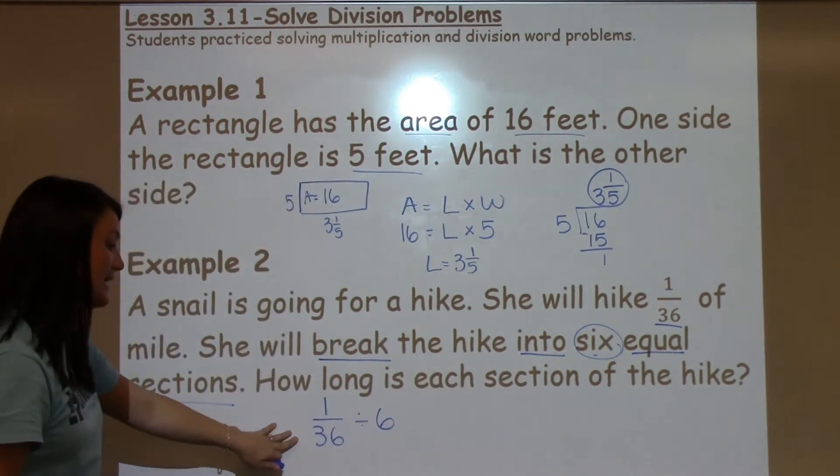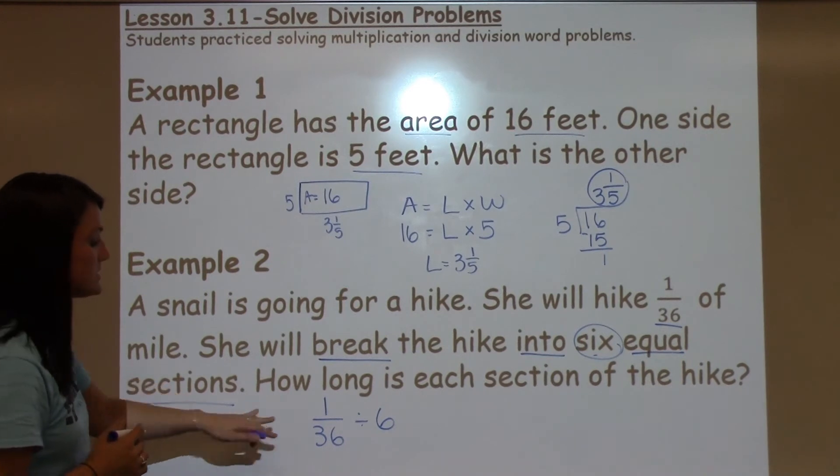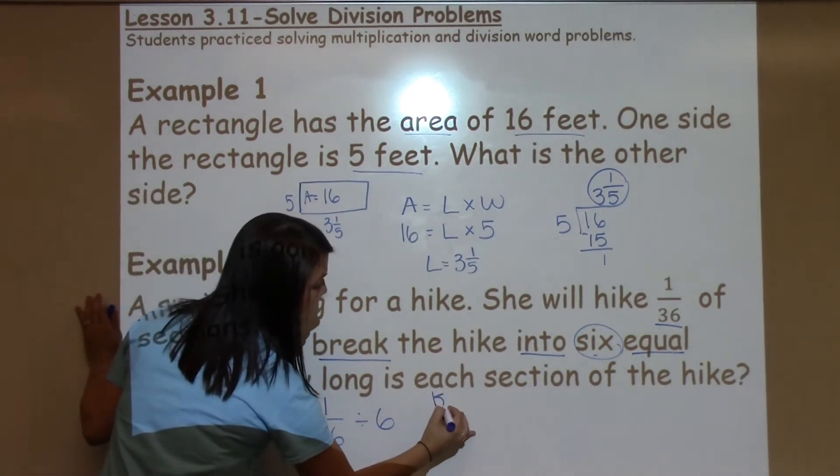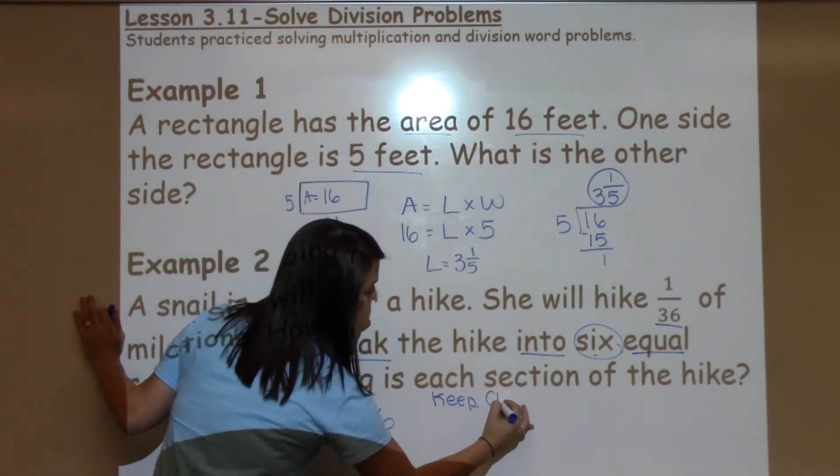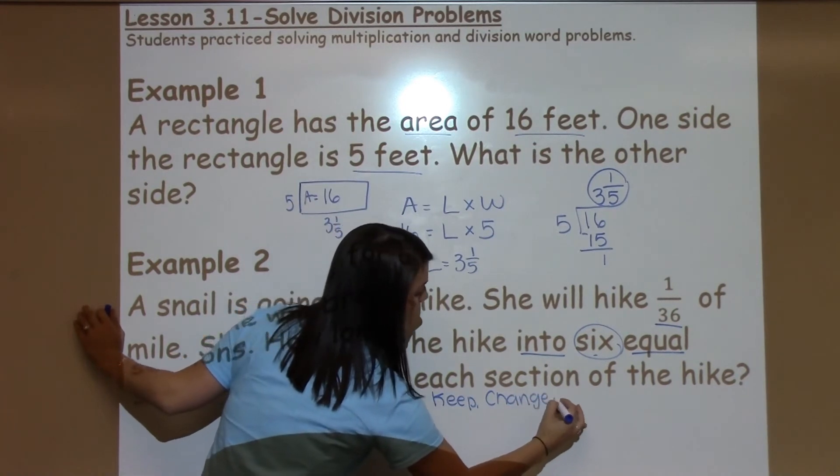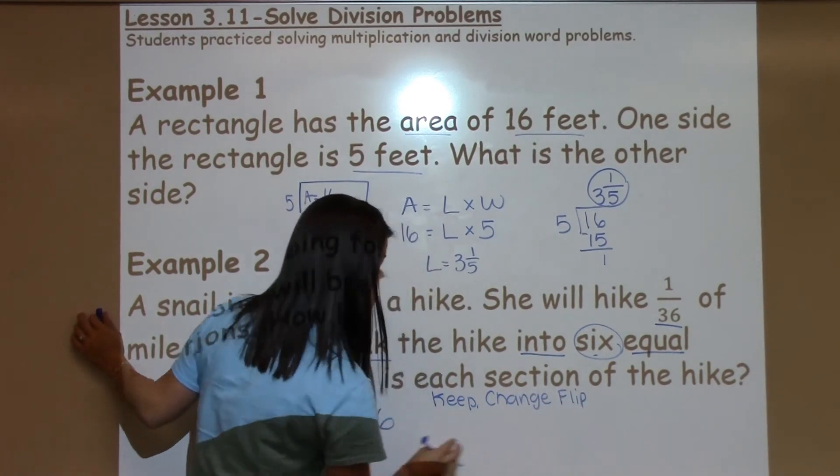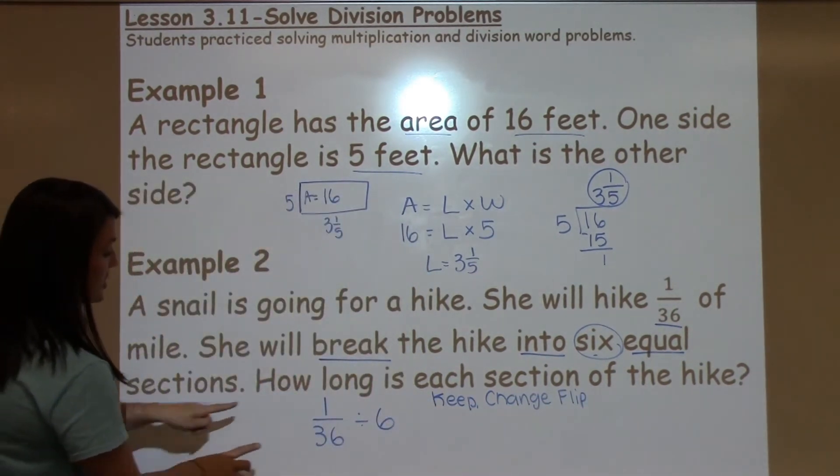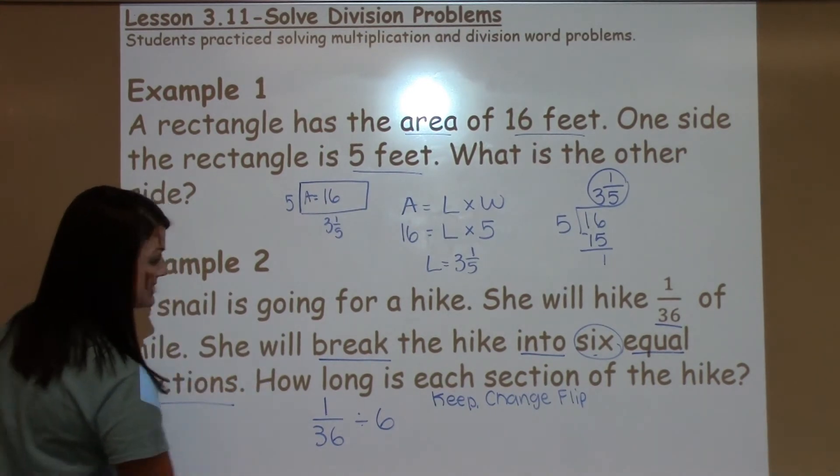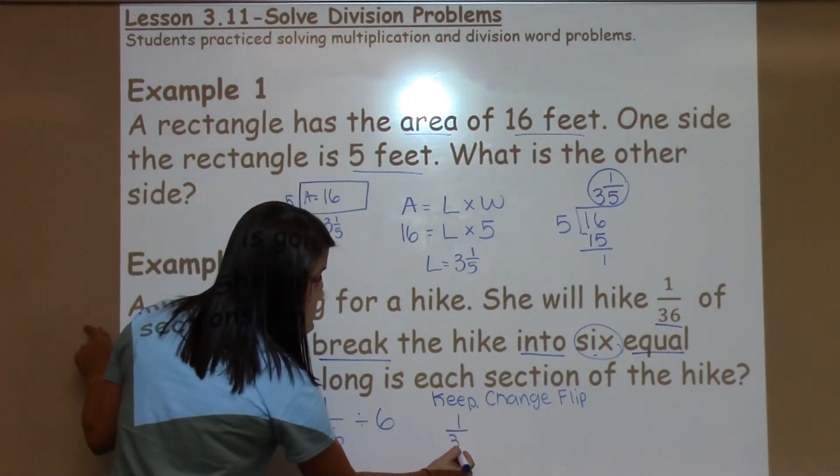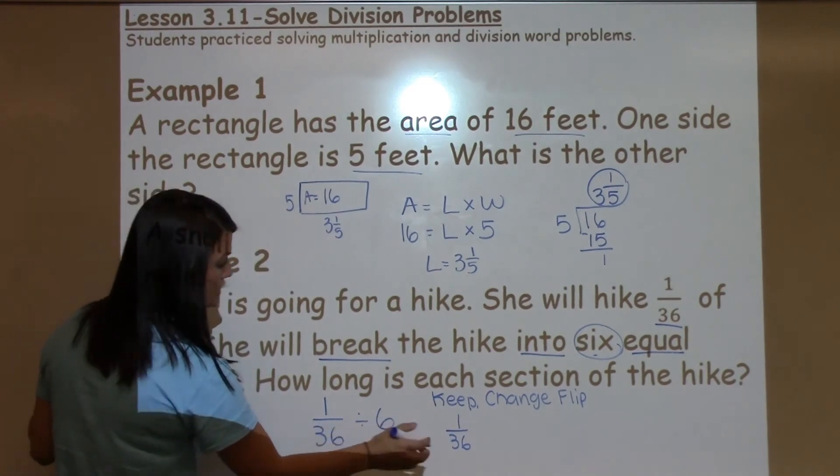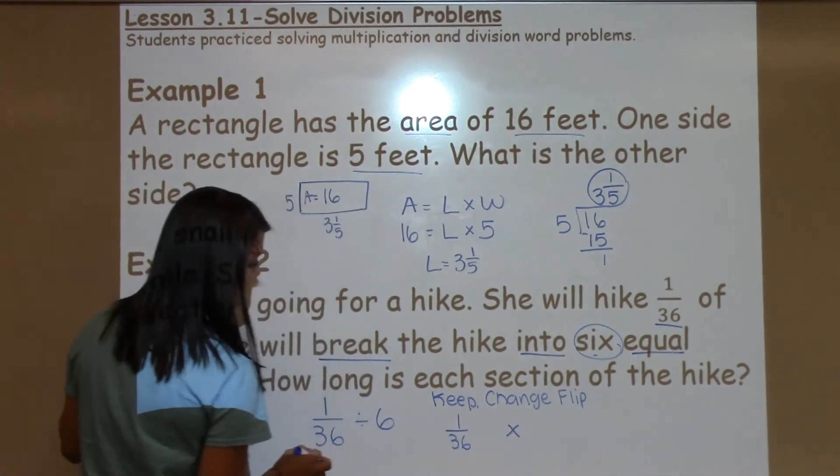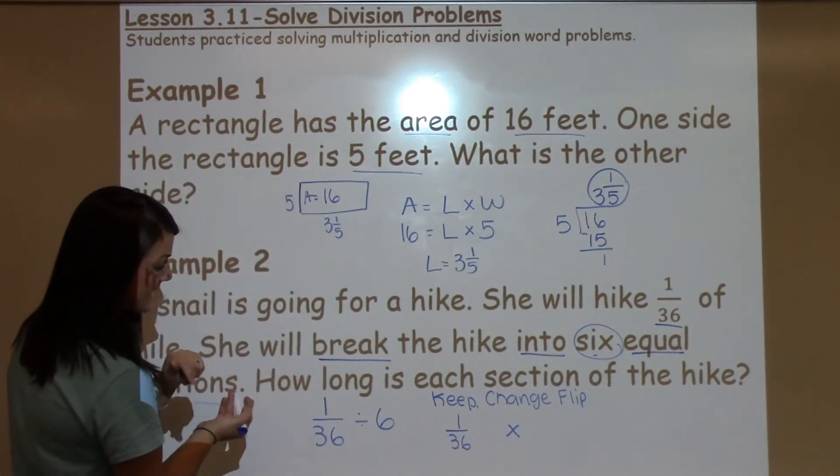Now, in the last lesson, we learned that we can do a method called keep, change, flip whenever we have a fraction in our division problem. So I'm going to keep 1/36th exactly the same. I'm going to change division to multiplication, and then I'm going to flip my 6.